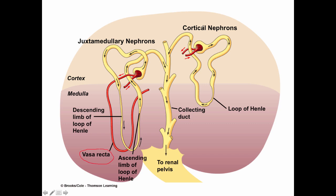So the three structural differences between the two nephron types are: one, the position of their glomeruli; two, the length of the loop of Henle; and three, juxtamedullary nephrons have a vasa recta. Functionally, juxtamedullary nephrons are extremely important for the kidney's ability to conserve water — they allow the kidney to produce very concentrated urine, conserving as much water as possible.